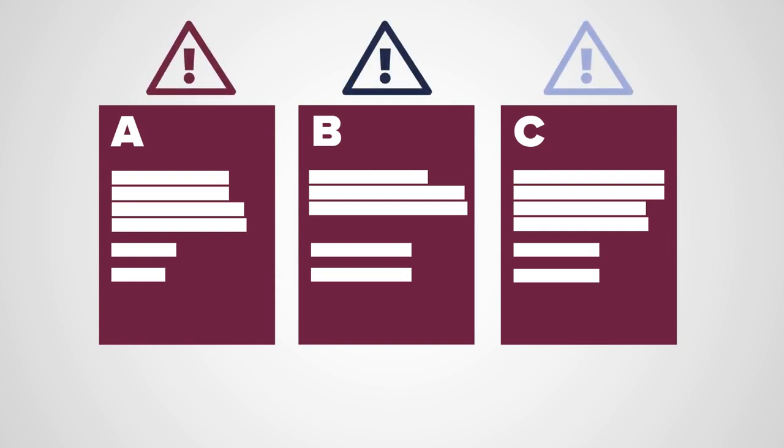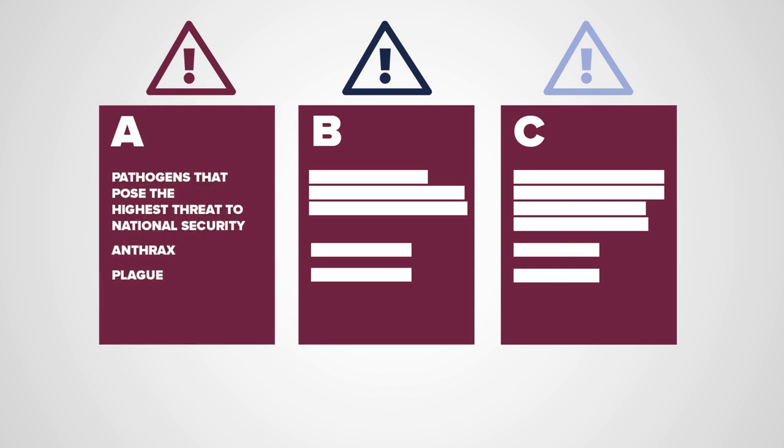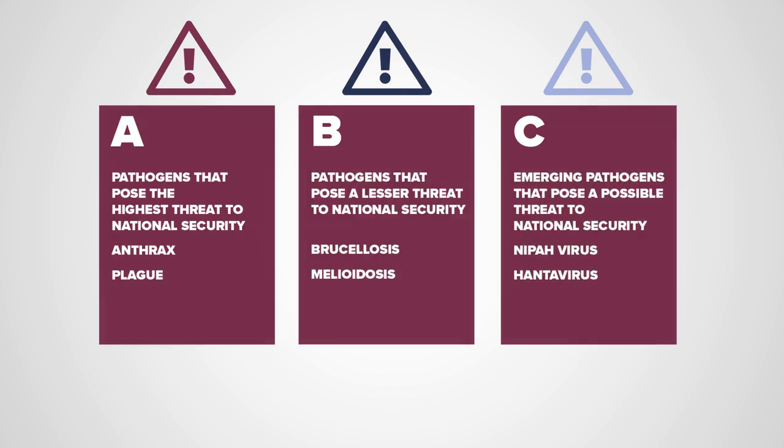Category A comprises pathogens that pose the highest threat to national security and public health, including bacteria such as anthrax and plague, with Category B and C being lower priority respectively.